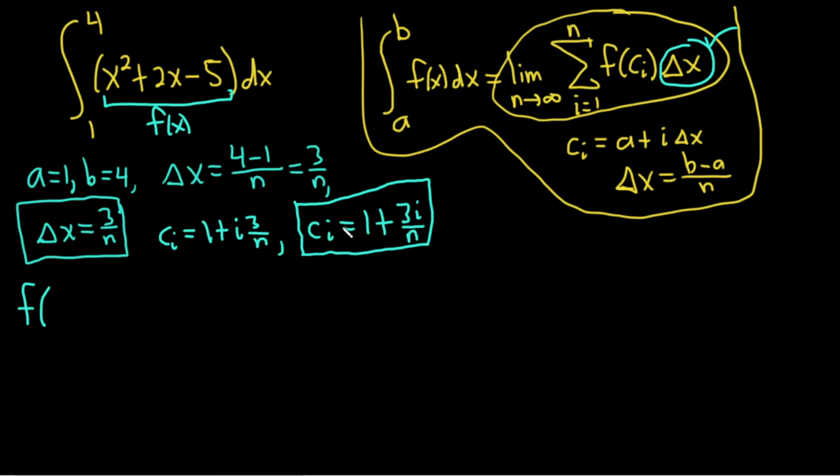So f(c_i), now I'm not going to put c_i, I'm just going to put 1 plus 3i over n. Because it's the same thing. So just like that. This is f of c_i right here. This is the c_i. And then you just replace each copy of x with 1 plus 3i over n. So this is (1 + 3i/n)², plus 2(1 + 3i/n), and then minus 5.